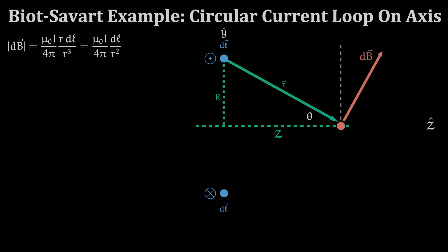If we draw a vertical line perpendicular to the z axis at our point of interest then we can see that this angle is also the same theta that we've previously labeled.